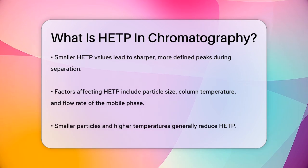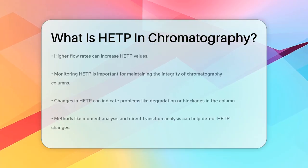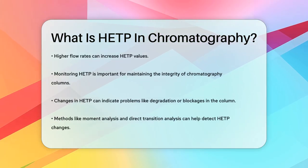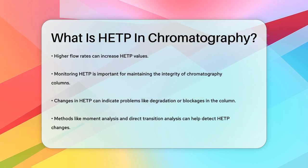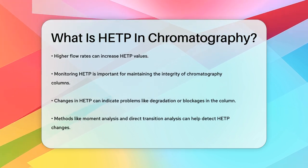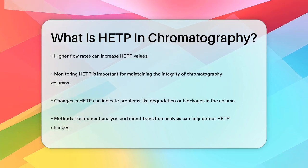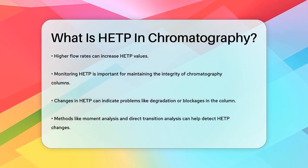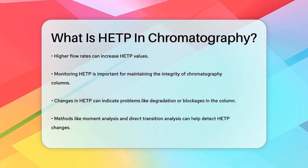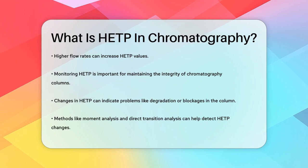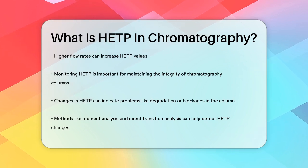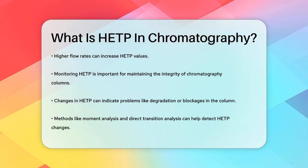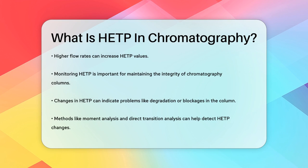In practical terms, monitoring HETP is crucial for maintaining column integrity. Changes in HETP values can signal issues with the column, such as degradation or blockages, which can be detected through methods like moment analysis and direct transition analysis.